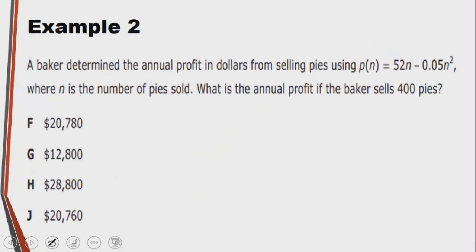Example 2: A baker determined the annual profits in dollars for selling pies using P(n) equals 52n. We are given that n is the number of pies sold. What is the annual profit if the baker sells 400 pies?